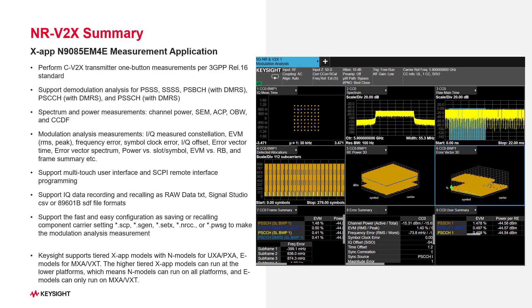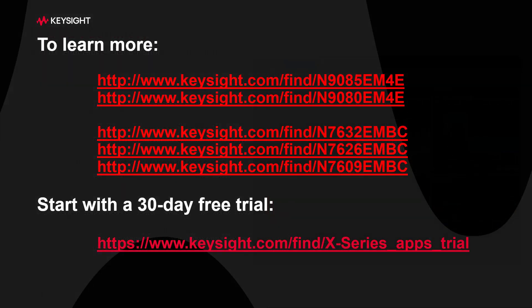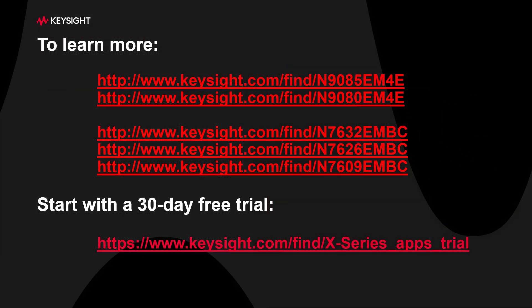In summary, XApp provides a comprehensive set of tools to analyze Cellular V2X sidelink signals based on the 3GPP specification, and they support various Keysight hardware platforms to meet your test needs. To learn more and to download a free trial, visit us at these websites. Thanks for watching.